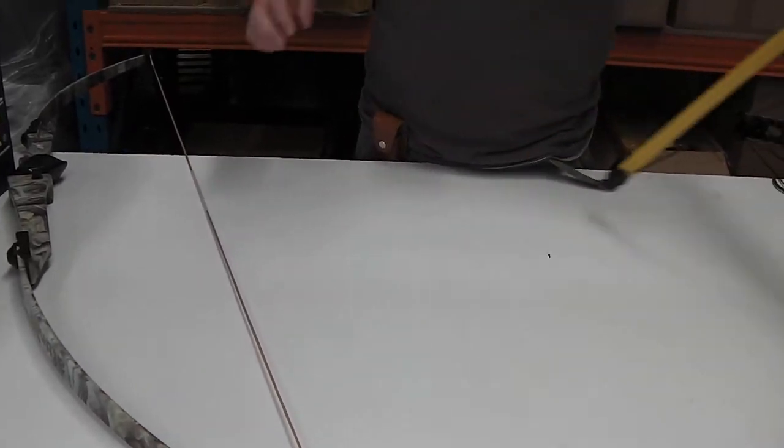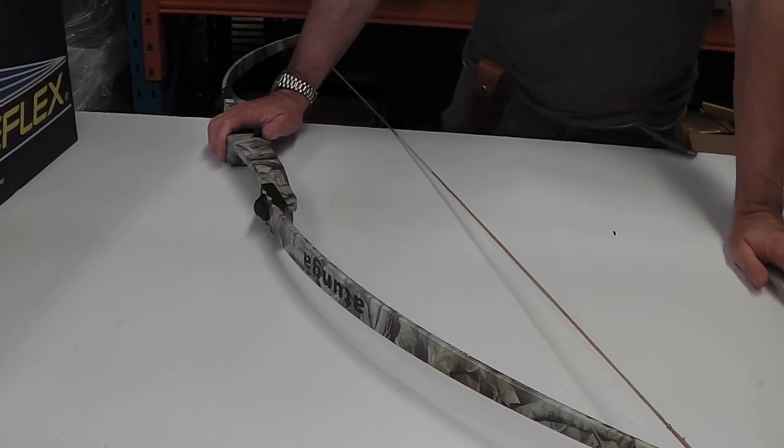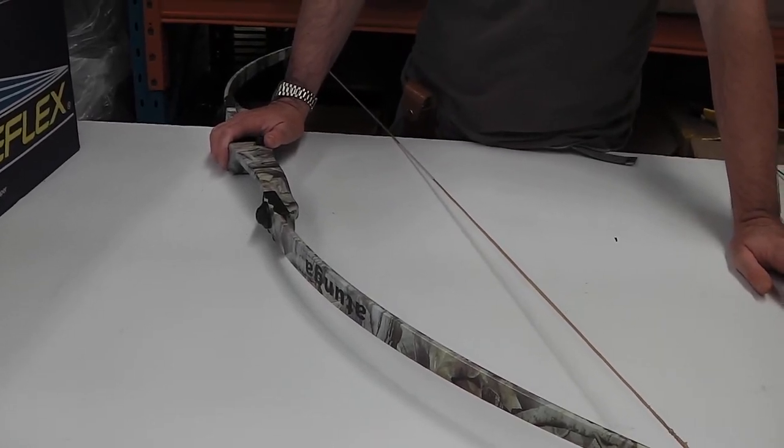The next one we have is our Otunga Black Ops longbow, which comes in 26, 34, and 48 pound versions.